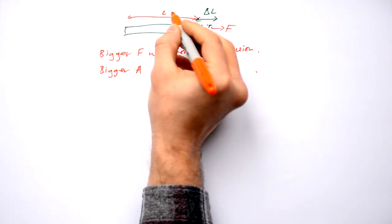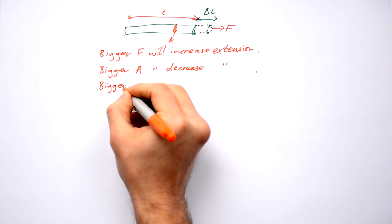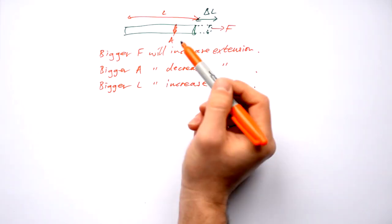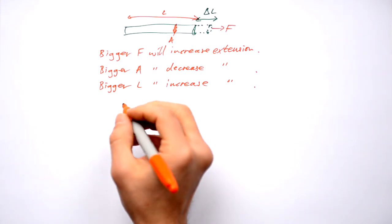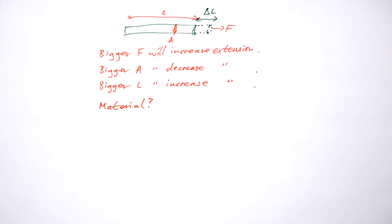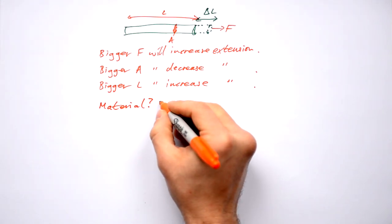Its original length will have a big effect as well. The bigger the original length, the more it will stretch. And then we've got one more thing. What material it is. There's got to be some property of a material that means that it's harder or easier to stretch. And we're going to call this the Young's modulus.